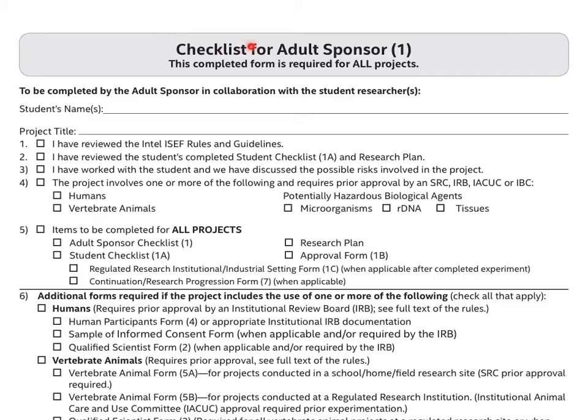The checklist for adult sponsor is Form 1 of the project approval form. It is required of all projects. Who fills this up? It's the adult sponsor.